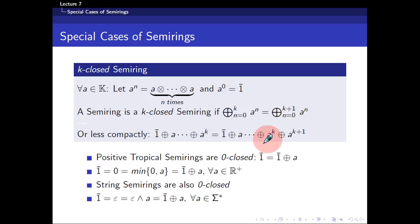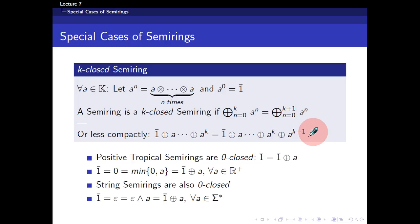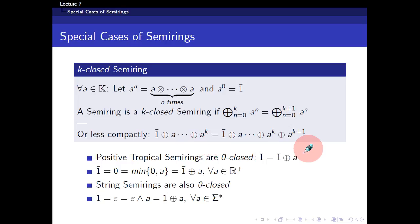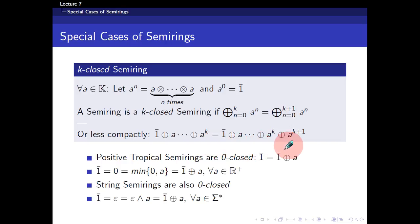What this means is: given the sum from a to power zero all the way to a to power k, adding the a to power k plus one term doesn't make a difference — the sum is the same. We call it a k-closed semi-ring because once you sum up to the first k plus one terms, you don't need to worry about the sum anymore, since the sum never changes from that point onwards.